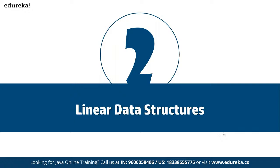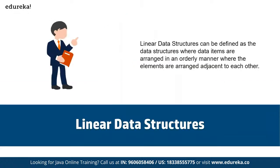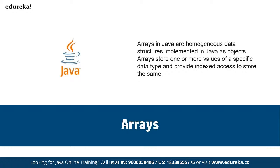Linear data structures in Java are those whose elements are sequential and ordered such that there is only one first element with only one next element, and there is only one last element with only one previous element, while all other elements have both a next and a previous element. An array is a linear data structure representing a group of similar elements accessed by index, and the size of an array must be provided before storing data. Each element is of the same data type and the same size, and elements are stored at contiguous memory locations.